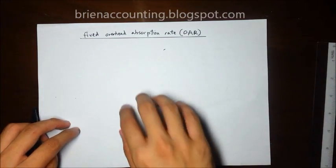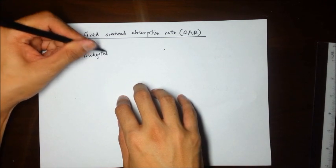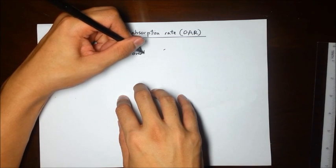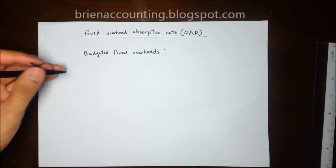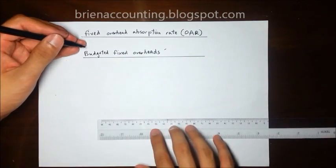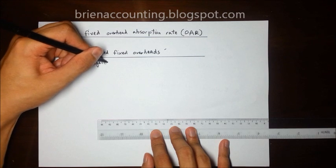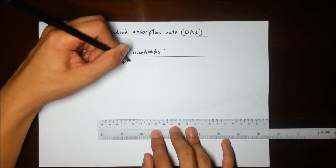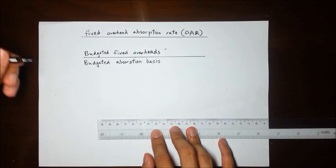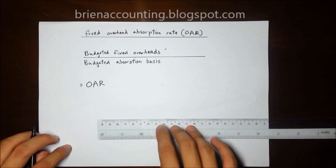The formula goes like this. You are going to take your budgeted fixed overheads and divide it by your budgeted absorption basis. This will give you OAR. For example,